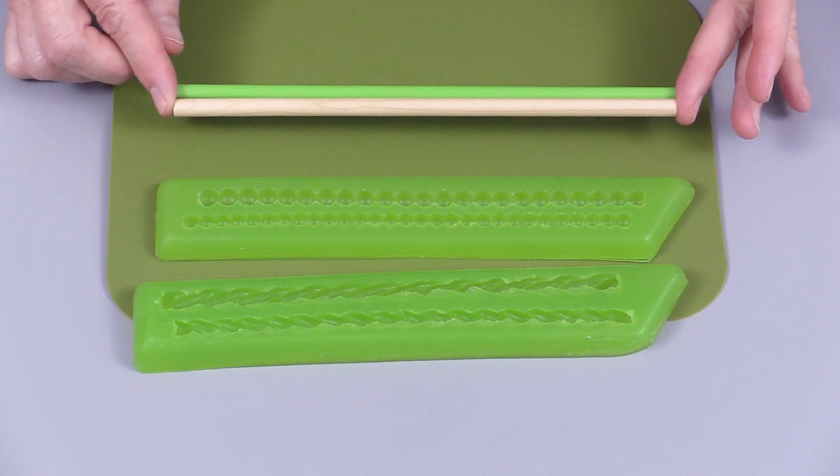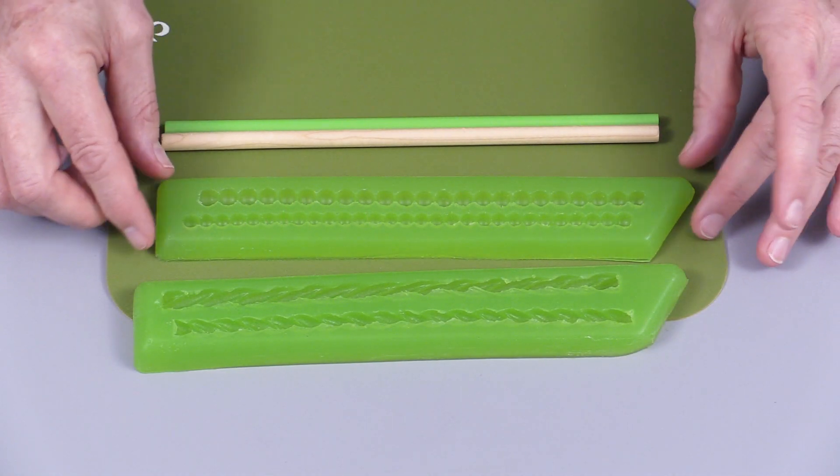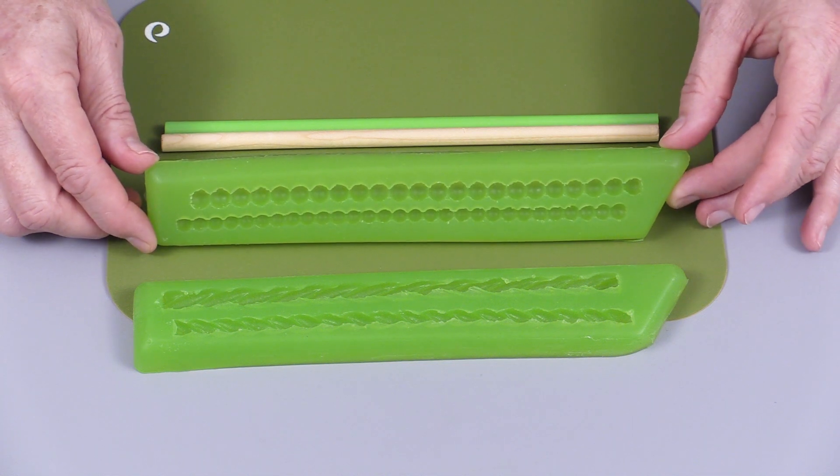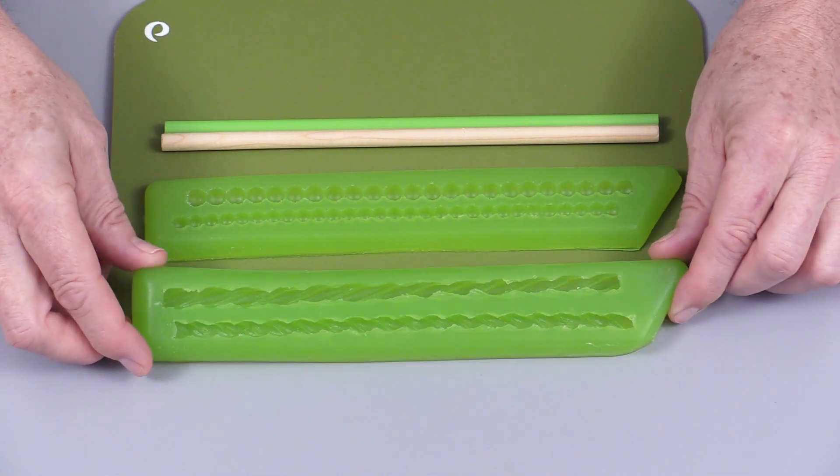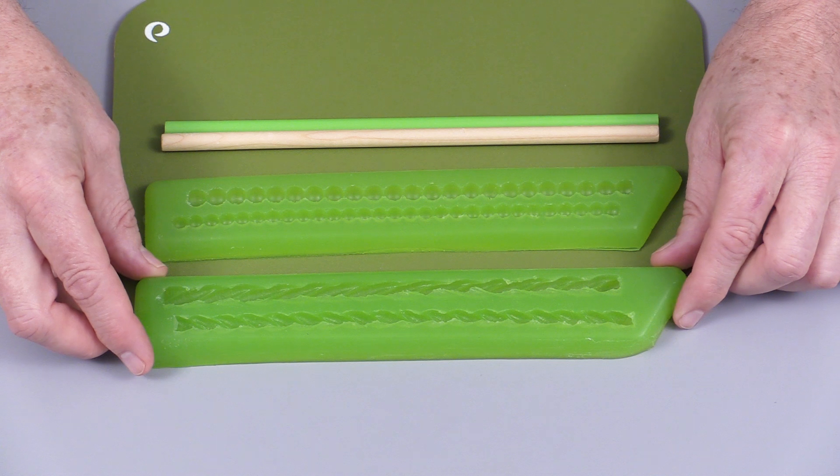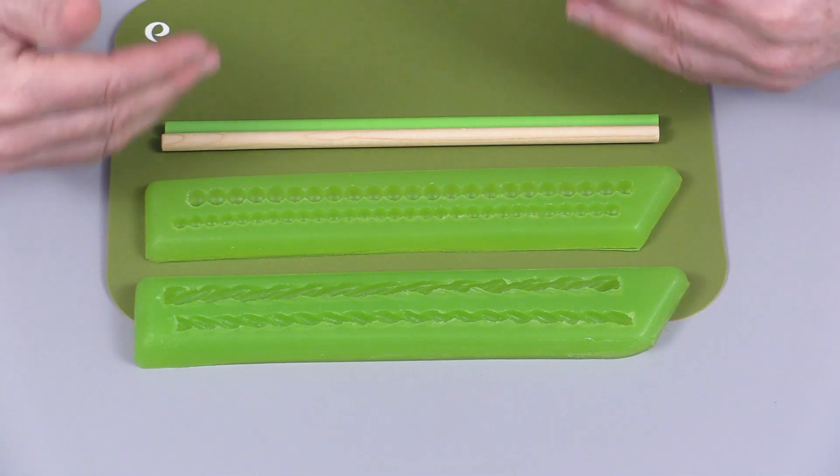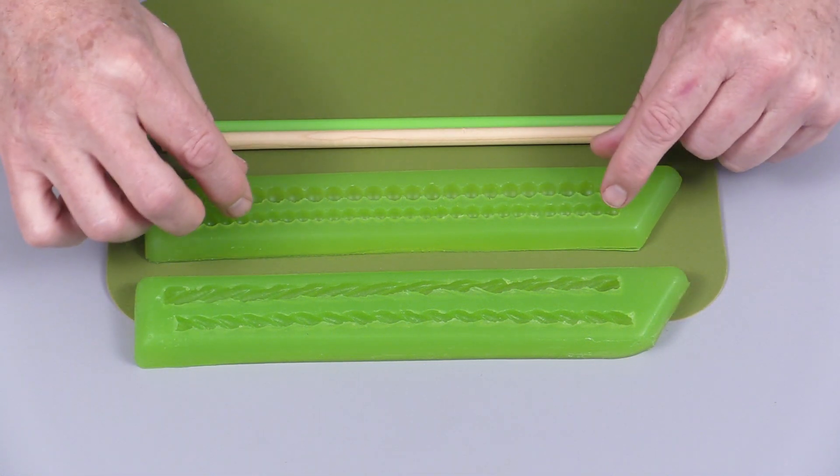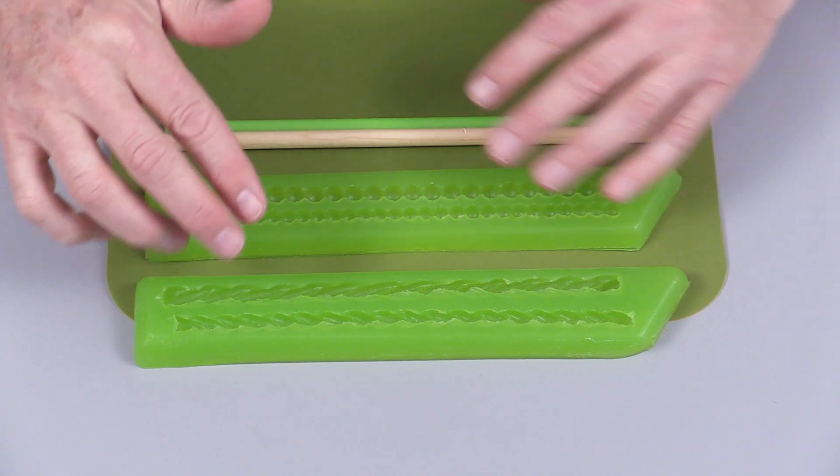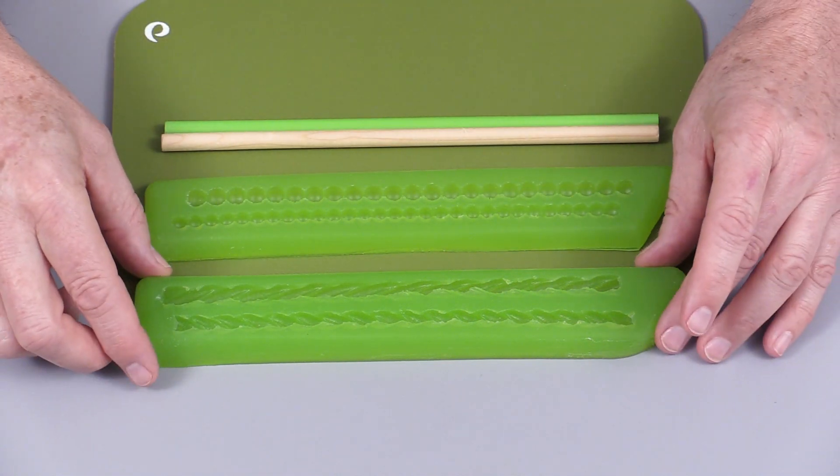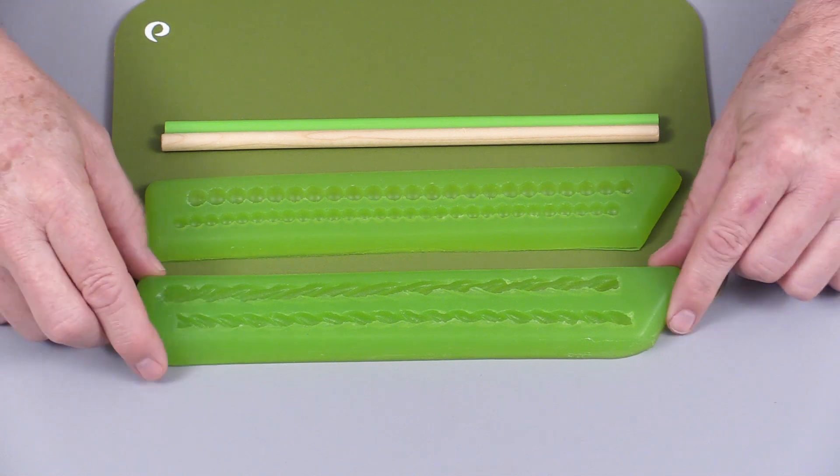These are the Easy Mold Sticks, the Easy Mold Strand of Pearls, and the Easy Mold Rope. I'm going to show you how to use these three components—the sticks and the molds—because they're all interchangeable and the technique is the same for creating the pearls as it is for the rope.